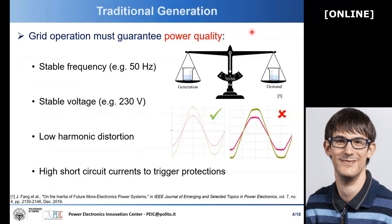However, the power system, as it was designed more or less 100 years ago, was designed to guarantee a certain power quality, and this power quality is needed for correct operation. Power quality means basically a stable frequency — for example, 50 Hz in Europe — and this means that at every instant, the active power of the generation and the demand must be balanced. Otherwise, the frequency will shift and deviate from the nominal point.